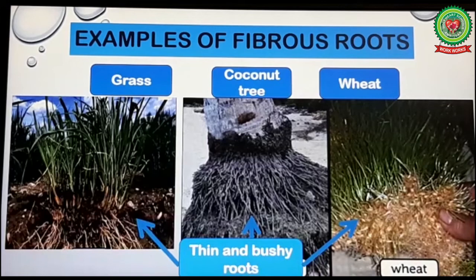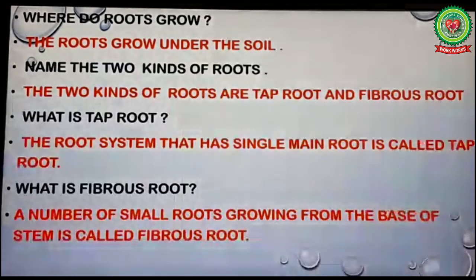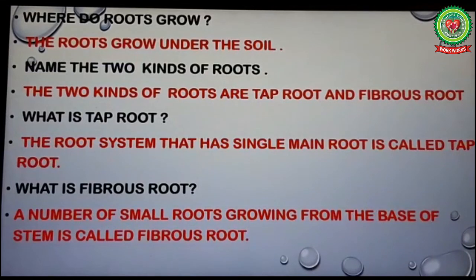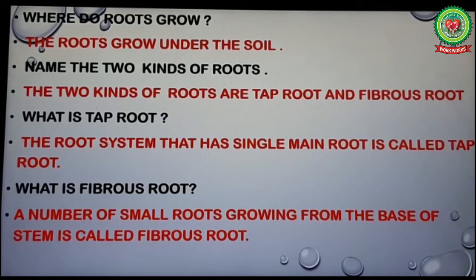Now let's revise. My first question: where do roots grow? The roots grow under the soil. Second: name the two kinds of roots. The two kinds of roots are taproot and fibrous root. Third: what is taproot? The root system that has a single main root is called taproot.